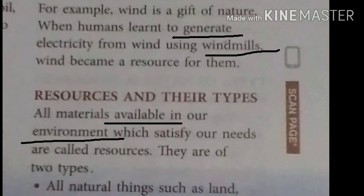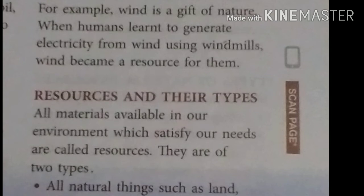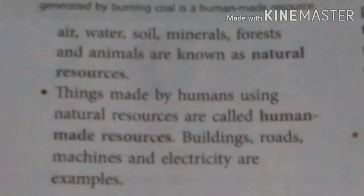Resources and their types. All materials available in our environment which satisfy our needs are called resources. They are of two types. All natural things such as land, air, water, soil, minerals, forests and animals are known as natural resources. Things made by humans using natural resources are called human-made resources. Buildings, roads, machines and electricity are examples.